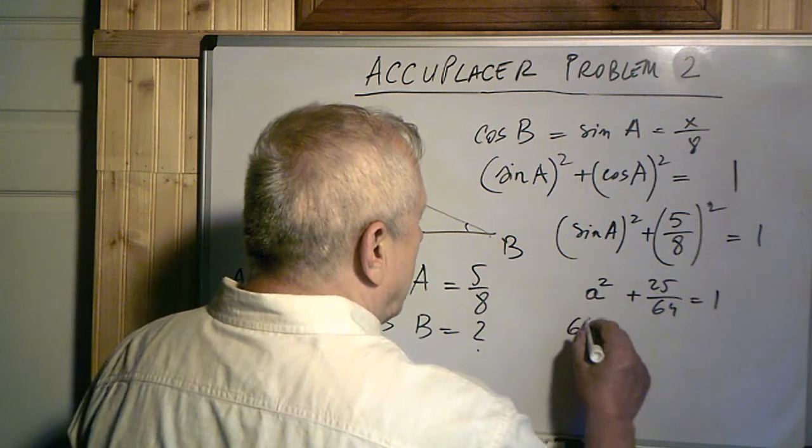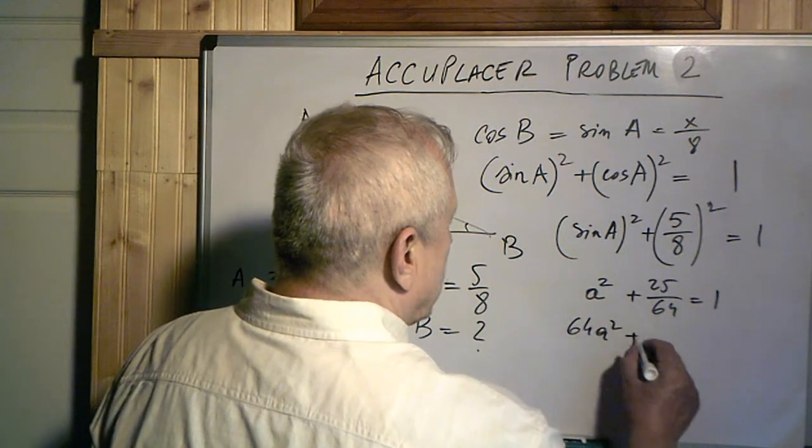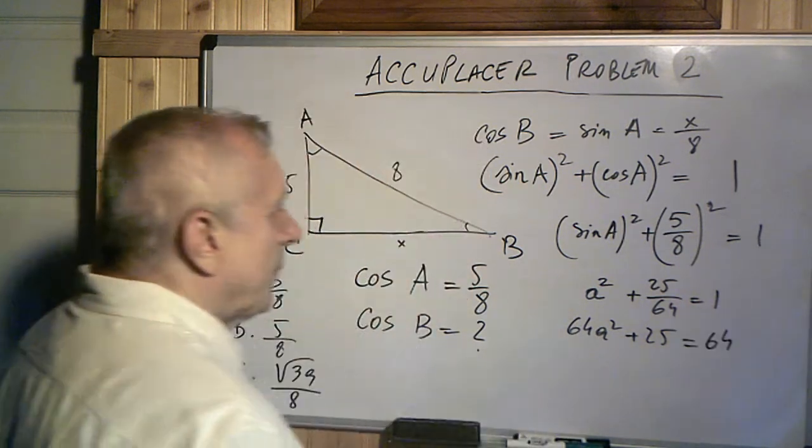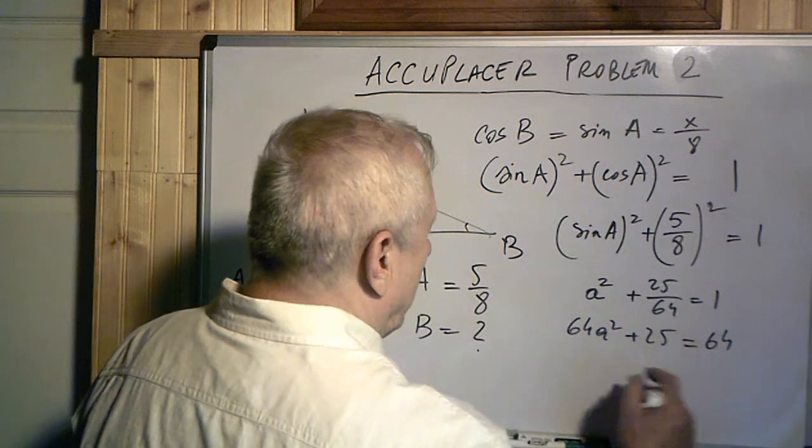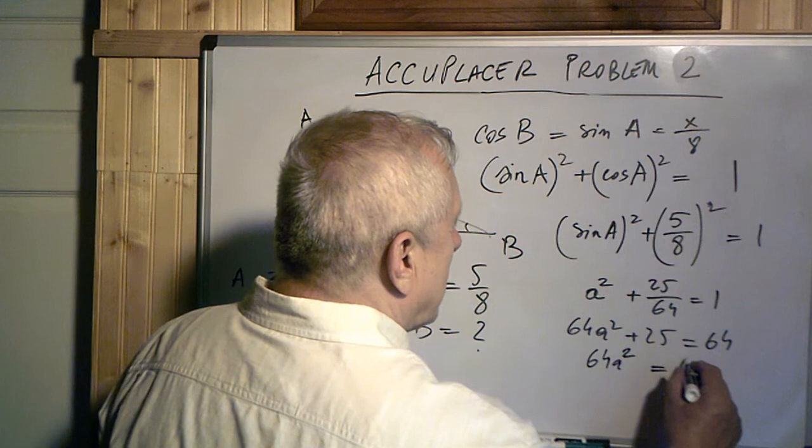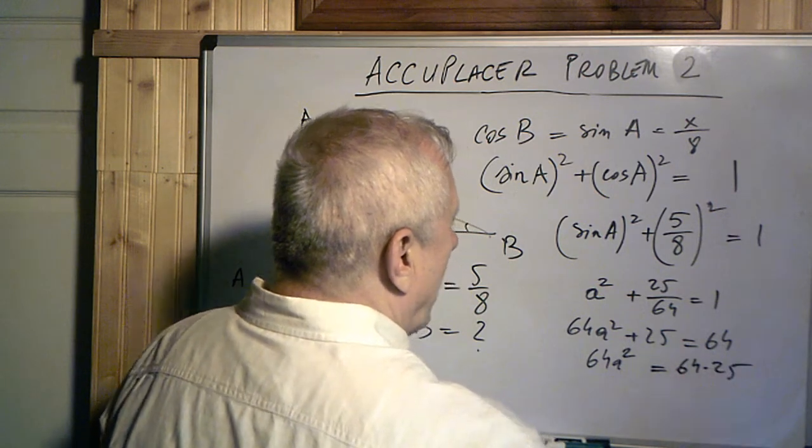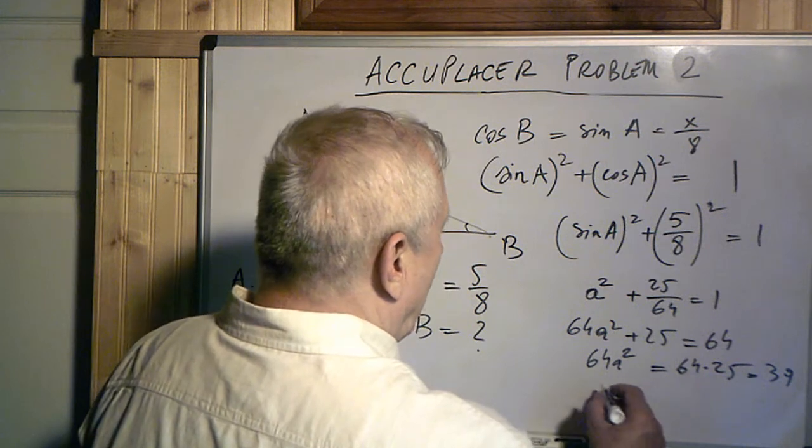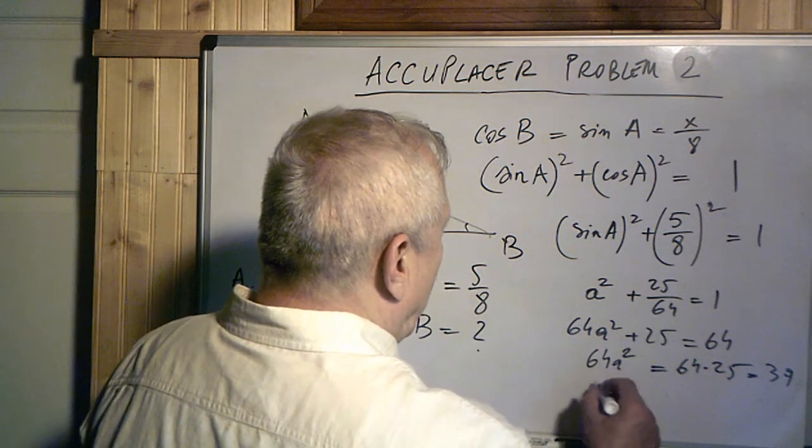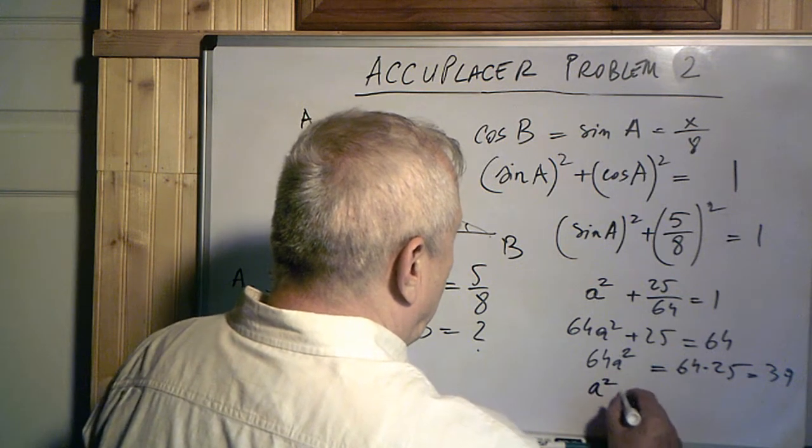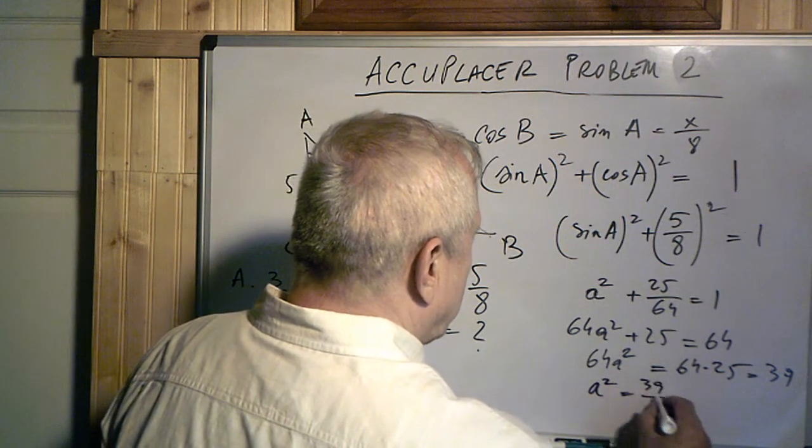So that would be 64a squared plus 25 equals 64 here also, 64 times 1. Now let's subtract 25 and move it on the other side. So 64a squared equals 64 minus 25, which is 39. Alright. Now let's divide by 64 on both sides, and that would be a squared equals 39 over 64.